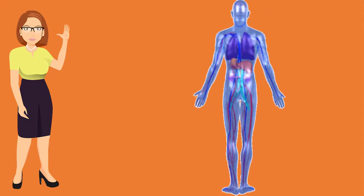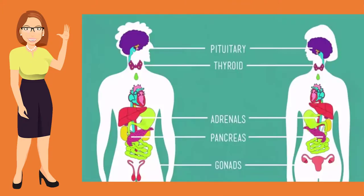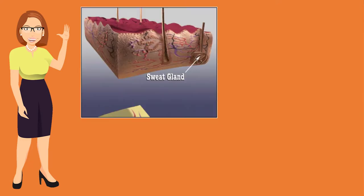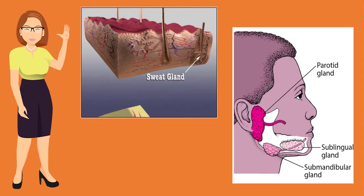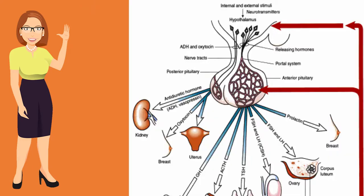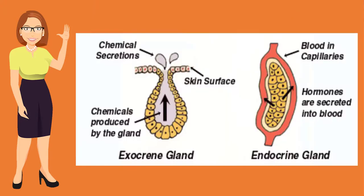In the human body, so many glands are present which produce many secretions like sweat, saliva, oil, hormones, etc. These glands are divided into two types: endocrine glands and exocrine glands. So today we will discuss them.